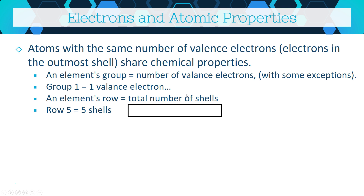The row (also called the period) tells you how many shells an element has. Row 1 (hydrogen and helium) has one shell, row 2 has two shells, row 3 has three shells, row 4 has four shells, and so on. Just remember that hydrogen and helium are row one — sometimes periodic tables display them in ways that aren't obvious. Once you know an element's row, you know how many shells it has, and from there you can work out subshells and beyond.